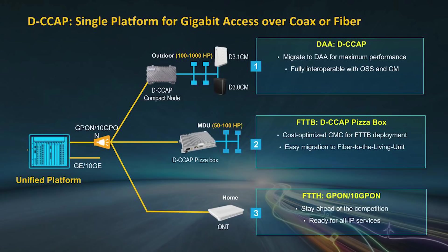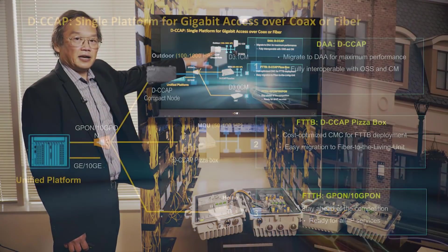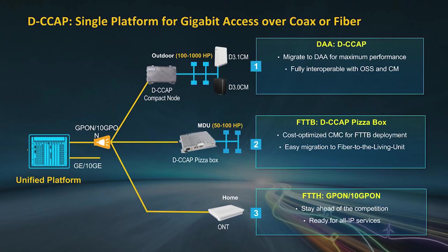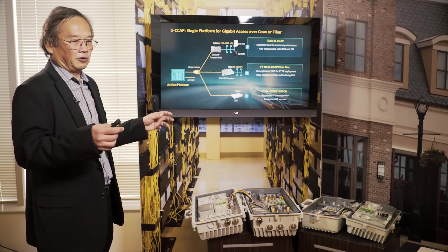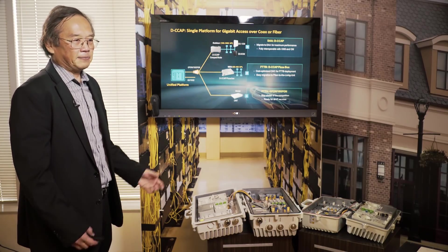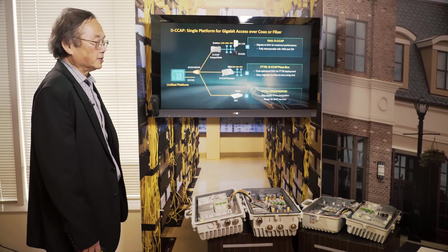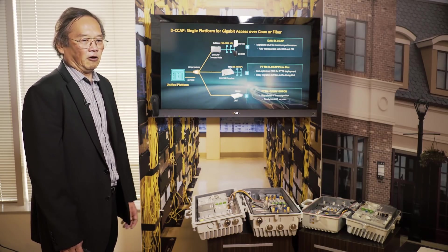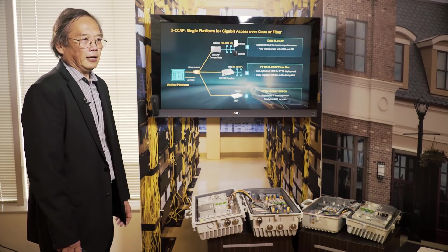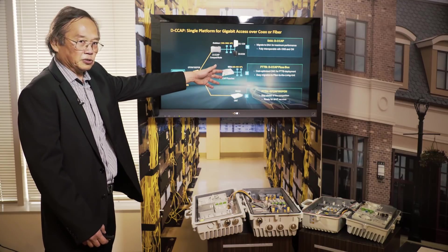Here we see two form factors. The top one here is designed for HFC migration — that's the box you see here, designed to replace an existing fiber node. It can support anywhere from 100 to 1,000 homes passed, depending on the size of the service group. As HFC does more and more node splits, the service group will gradually reduce toward less than 100 homes passed. Evolving an HFC plant with the existing DOCSIS solution is actually much more cost effective than a wholesale swap-out of the coax plant with fiber connections to individual subscriber homes.